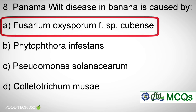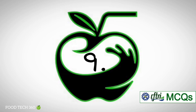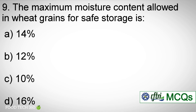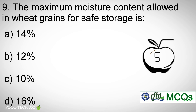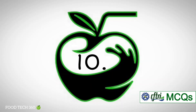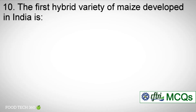Question number nine: The maximum moisture content allowed in wheat grains for safe storage is — options: a) 14%. b) 12%. c) 10%. d) 16%. Correct answer: a) 14%.